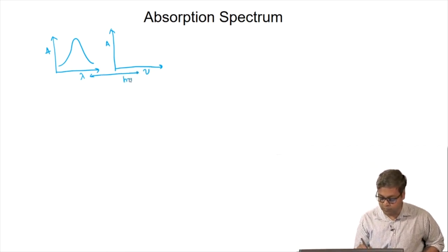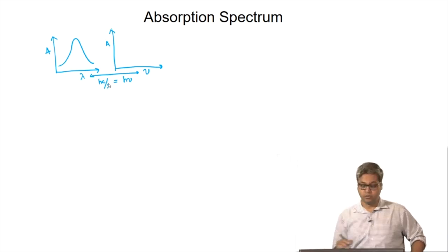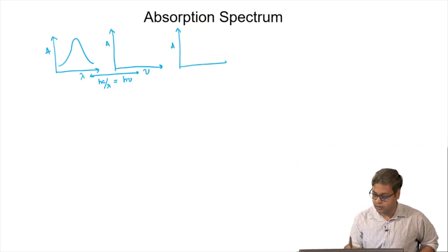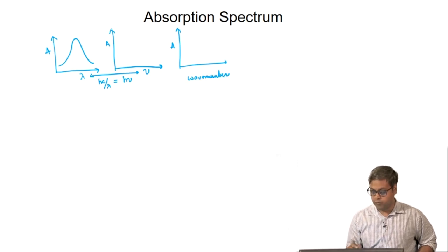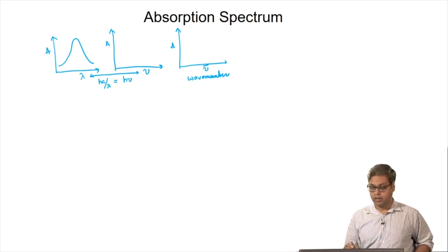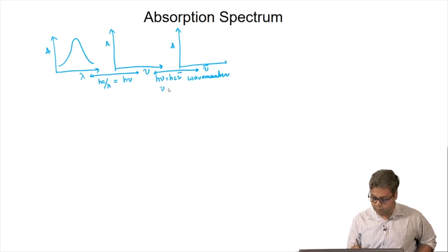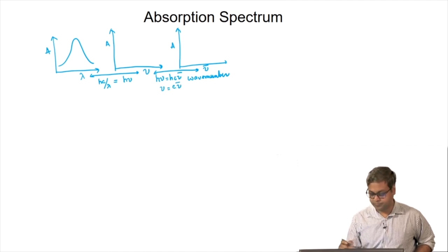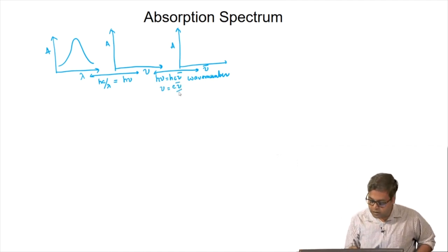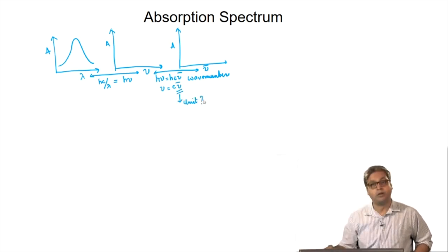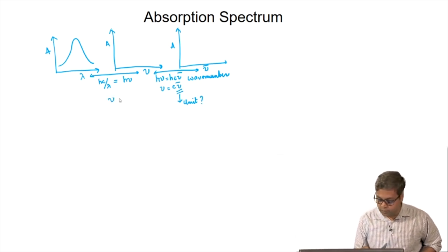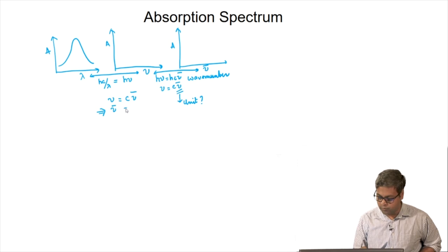We can write H nu equals HC by lambda. Moreover, we can also plot absorbance against wave number. Wave number is denoted by nu bar, and nu bar is related to frequency because H nu equals HC times nu bar, or we can write nu equals C nu bar. The next question is: what is the unit of nu bar? Because we can write nu bar equals nu by C.